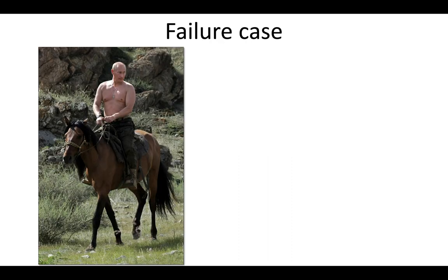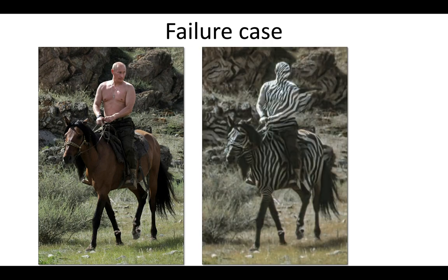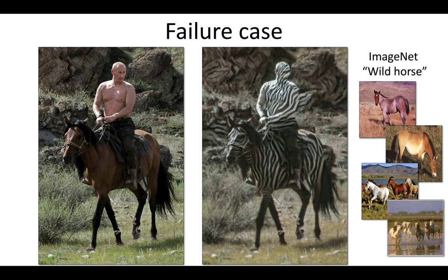Of course, algorithms make mistakes and CycleGAN is no exception. Here's a random person riding a horse — perhaps we can create a new image of this person riding a zebra instead. CycleGAN got confused by the human skin and horse skin, and also zebra-striped the logs in the background. The reason: the training images went from wild horses to zebras with no human riders and no logs. CycleGAN does not work very well given this new content in the test images.